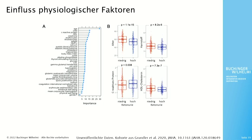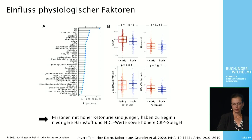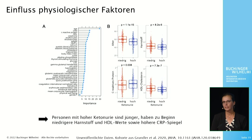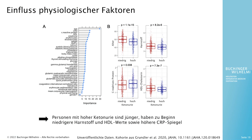Next, we tested the influence of physiological factors on ketonuria using a machine learning method. The strongest factor that influenced ketonuria was age, followed by baseline levels of urea, C-reactive protein, and HDL cholesterol. Individuals with high ketonuria were found to be younger and to have lower urea and HDL levels and higher CRP levels.